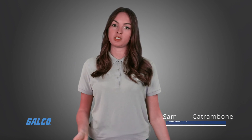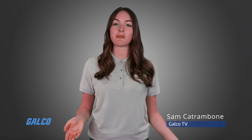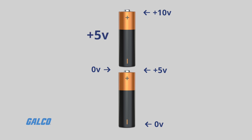Understanding bipolar voltage is simply a matter of understanding where voltage is measured against its ground or reference point. Two 5-volt batteries in series represent a potential difference of 10 volts. If the ground reference of the circuit is the connection between the two batteries, then one of the series would be labeled positive 5 volts and the other would be labeled negative 5 volts.